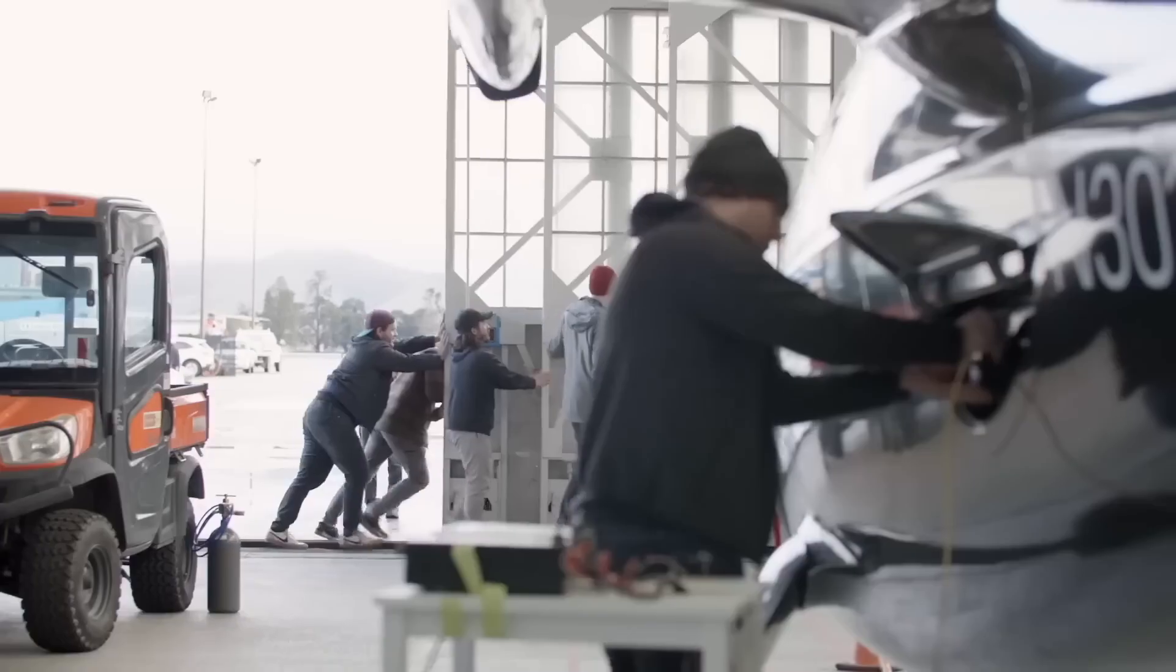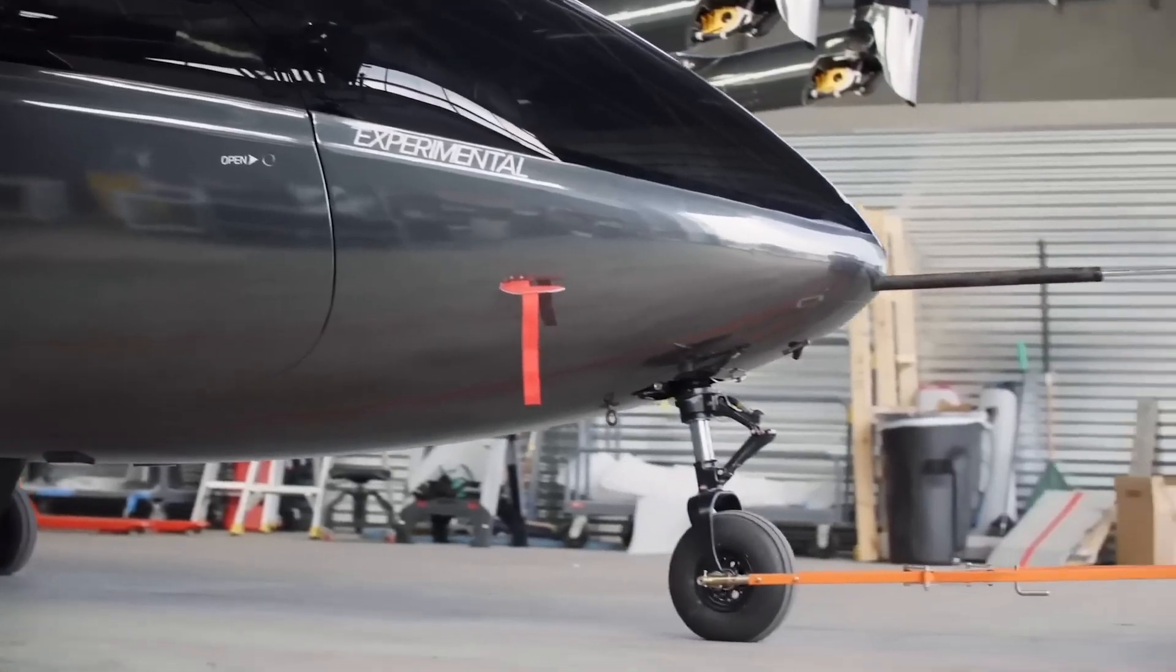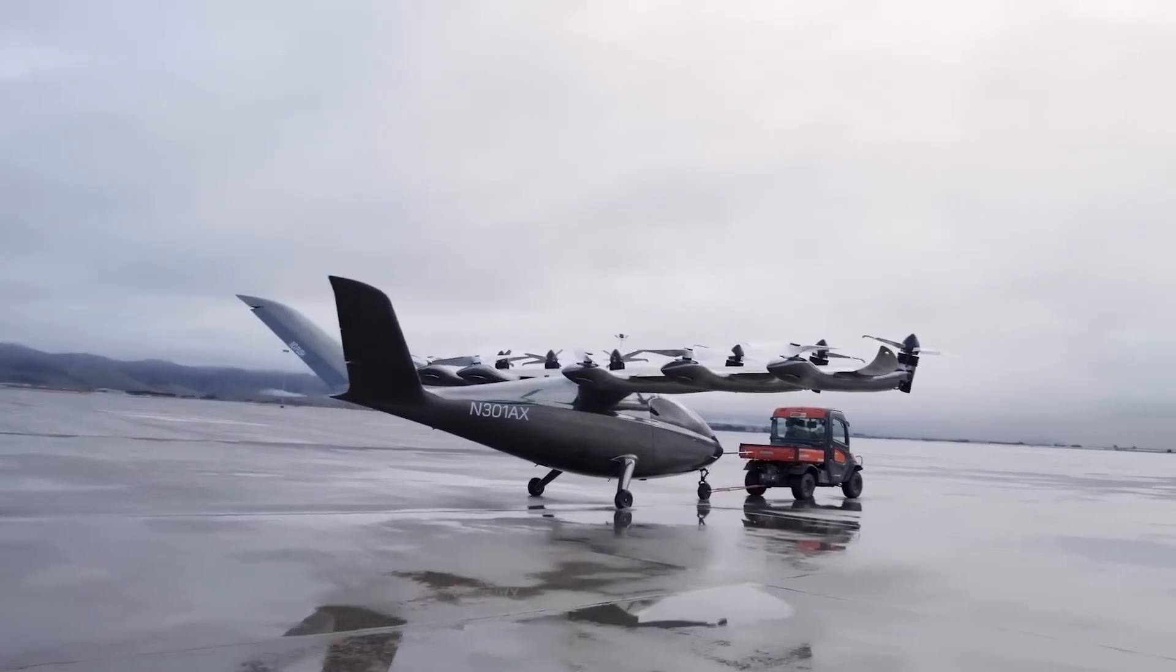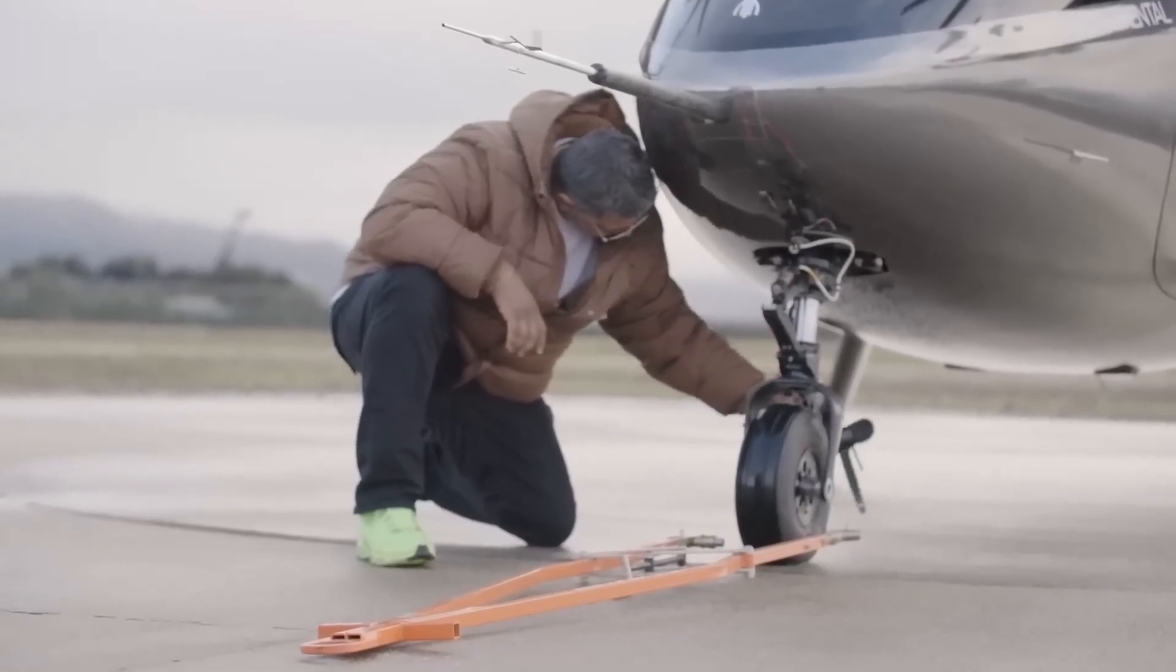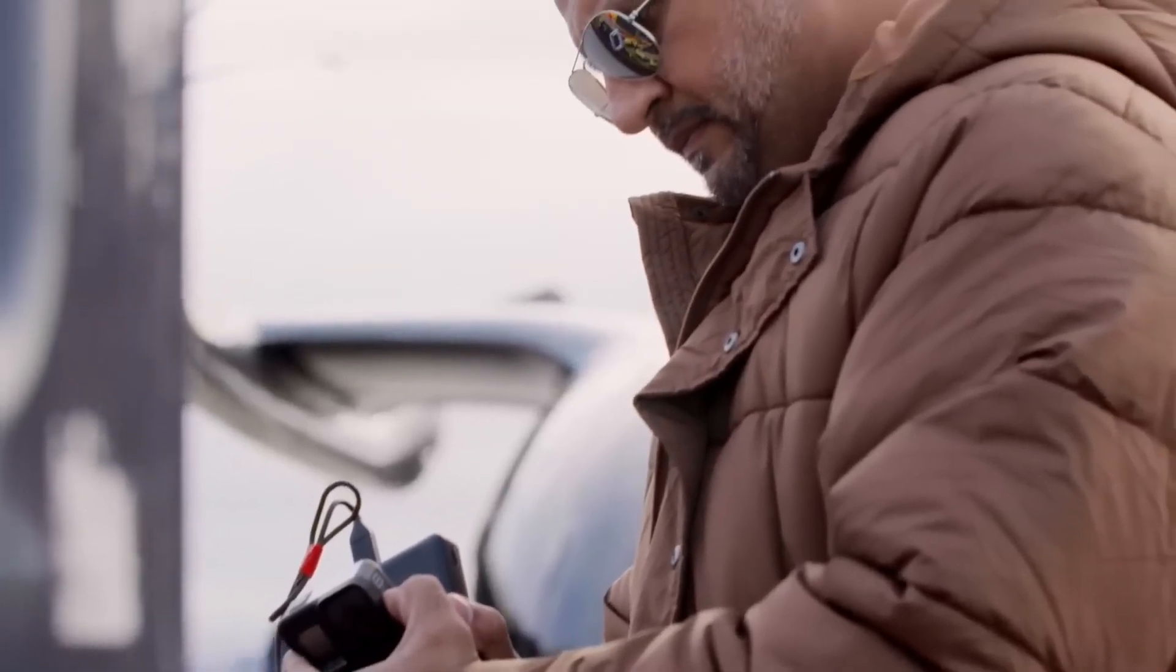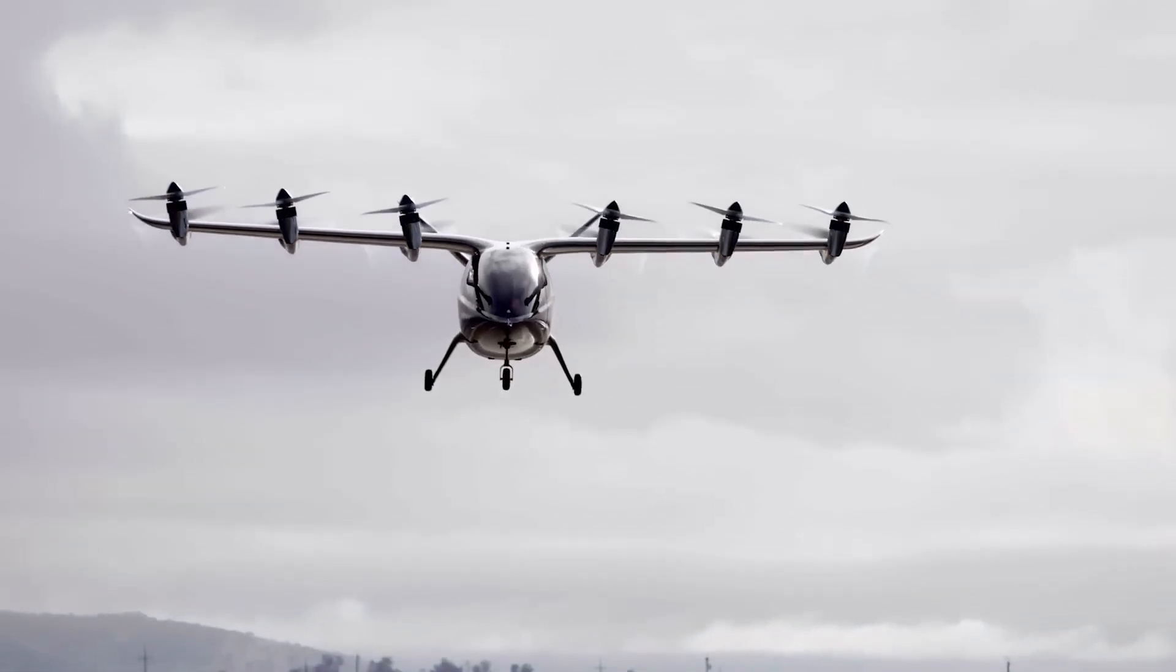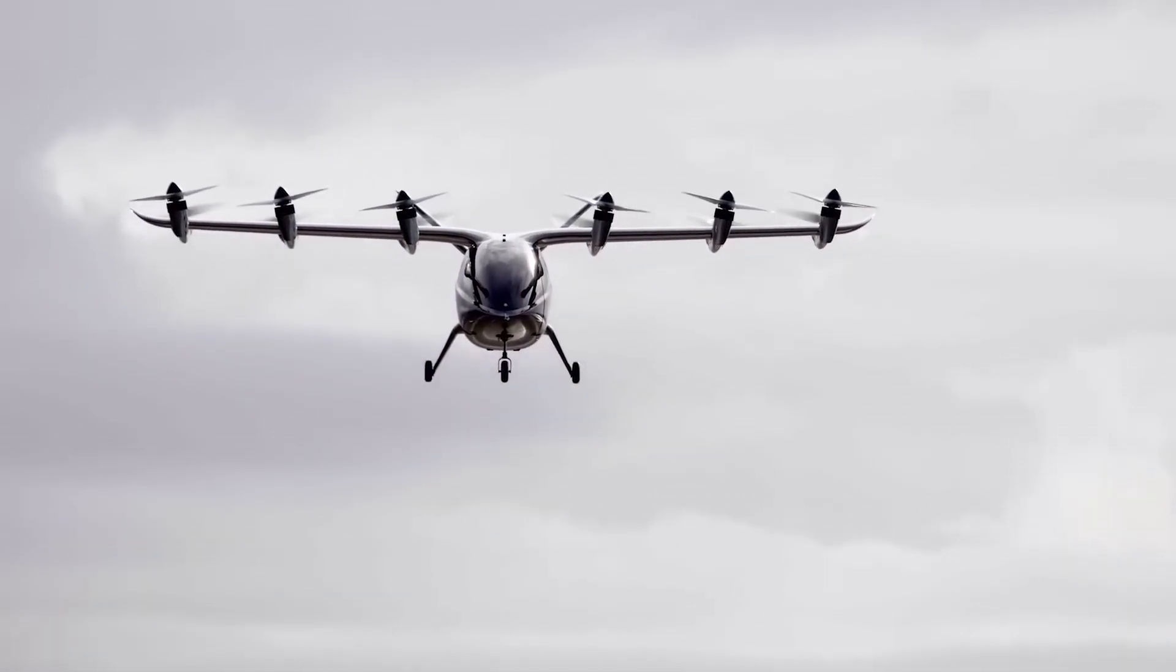American company United Airlines will soon launch the first route of the electric air cab in Chicago in cooperation with Archer Aviation. The Archer electric vehicle with vertical takeoff and landing, capable of speeds up to 240 km per hour and carrying four passengers with luggage up to 160 km, will be used for the flights.